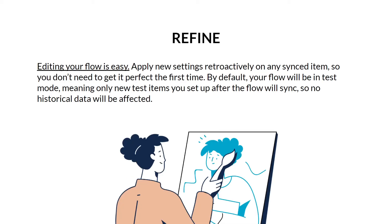Lastly, refine. Editing your flow is easy — apply new settings retroactively on any synced item, so you don't need to get it perfect the first time. By default, your flow will be in test mode, meaning only new test items you set up after the flow will sync, so no historical data will be affected. Now that we know how to approach our flow, we can get into the details of how to set up a new flow from scratch.